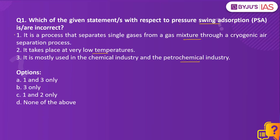Statement 1 is incorrect because while it is correct that PSA separates single gases from a gas mixture, it does so through a non-cryogenic air separation process — not cryogenic. Cryogenic air separation is energy intensive and uses very low temperatures. PSA uses a non-cryogenic process which operates at near ambient temperatures, that is, close to room temperature.